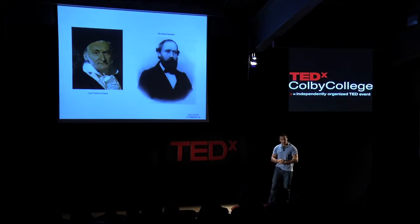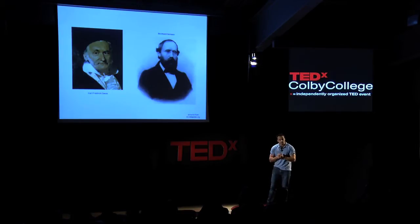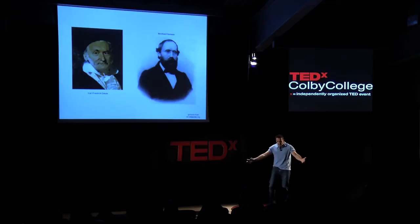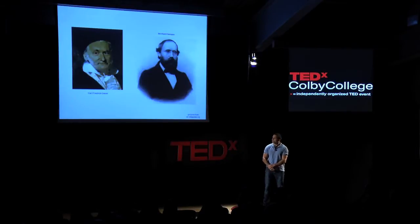You see the gentleman on the left — that's Carl Friedrich Gauss; on the right is Bernhard Riemann. What they did is give a precise definition of what curvature is and how to compute it. So let's put ourselves in their shoes and ask: what is a good notion of curvature? Let's start with the simplest object — a circle. We can define the curvature of a circle to be the reciprocal of its radius.